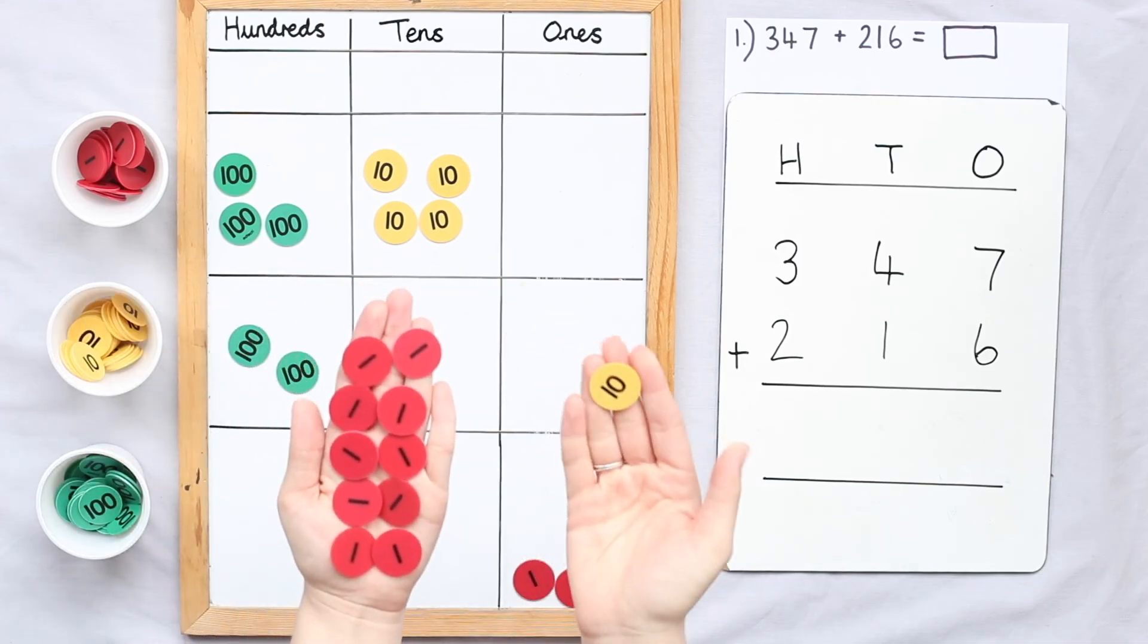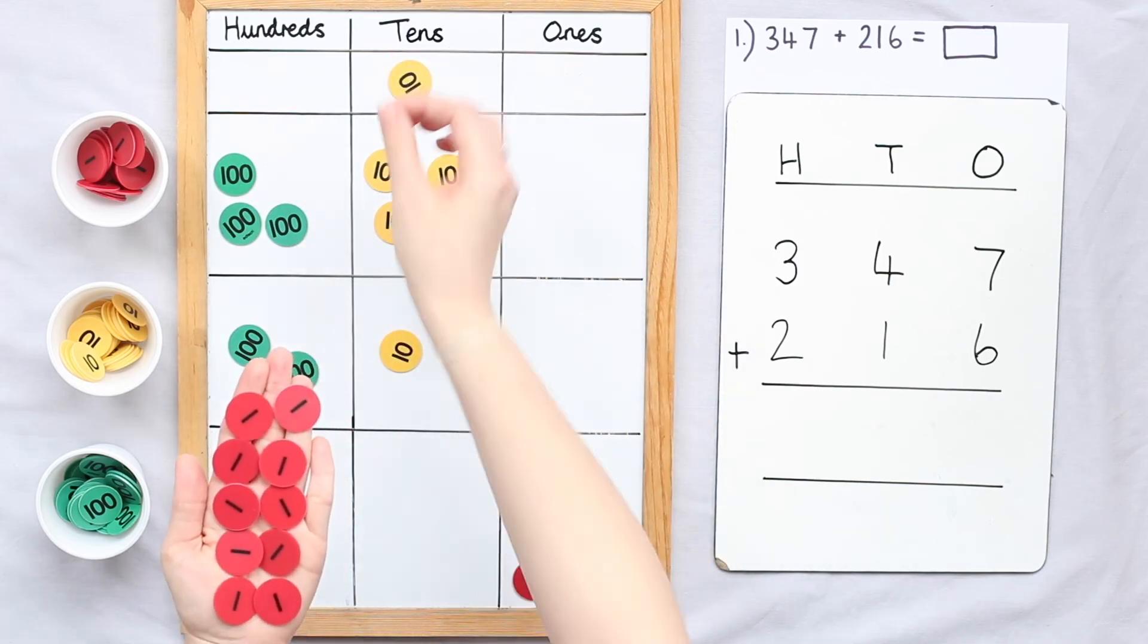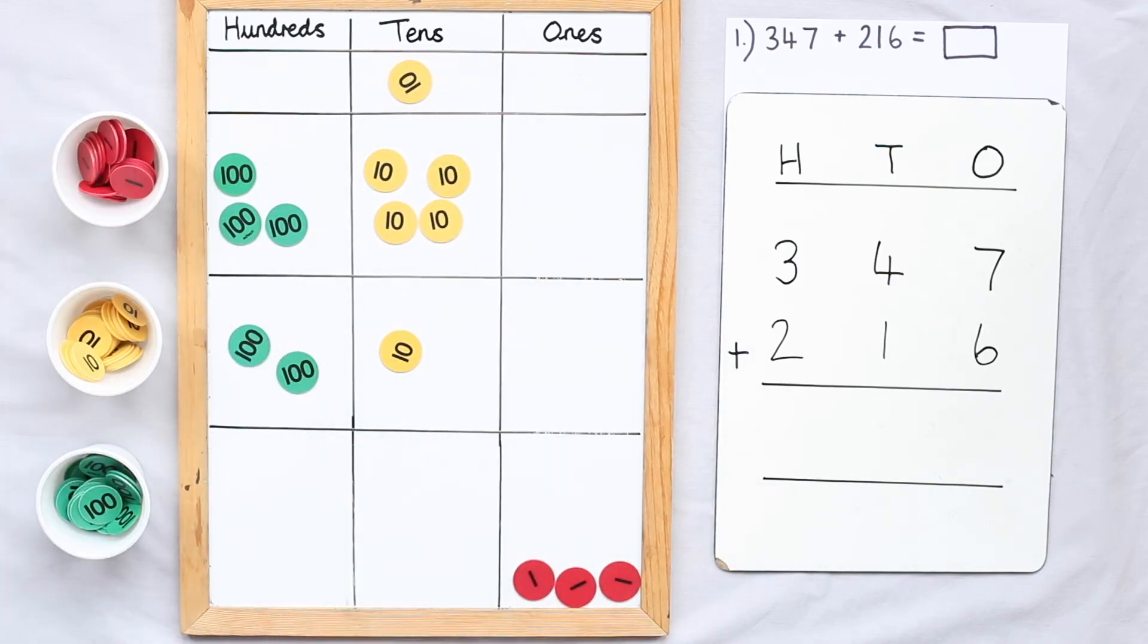I'm going to place my one ten in the tens column. Recording this correctly in our algorithm is really important. I now have three ones in my ones column, and I must remember to record the one ten I've placed in the tens column.